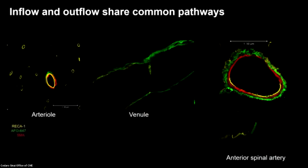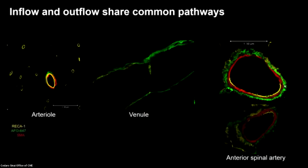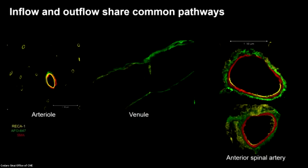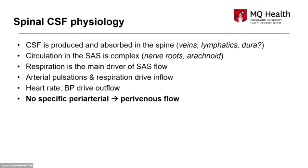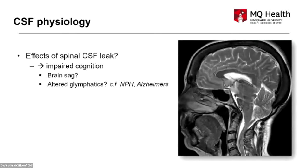This experimental study shows that after injection of a CSF tracer (shown in green), the tracer flows out around arteries as much as around veins — so there is no simple unidirectional flow. CSF physiology is far more complex. The key points are: CSF is produced and absorbed everywhere; respiration is the main driver of flow into the spinal cord; cardiac factors are important for outflow. What does this mean for patients with spinal CSF leak?